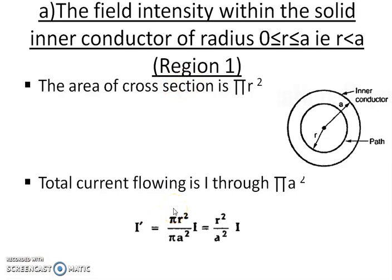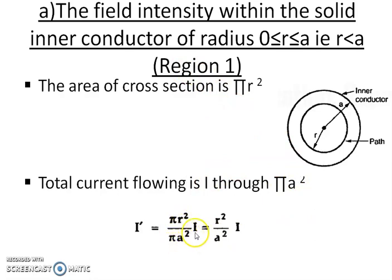In Region 1, r is less than a, so the area of cross-section enclosed is πr² square meters. The total current I flows through the area πa². The current enclosed by the closed path, taken as I dash, equals the ratio of cross-sections: I dash = (πr² / πa²) × I = (r² / a²) × I.